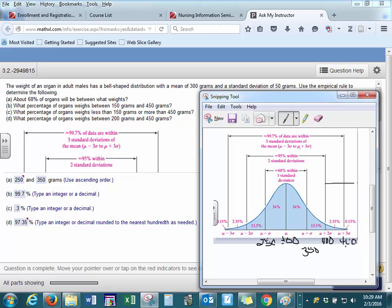If we go in the opposite direction, 250 minus 50 gives us 200 for two standard deviations. And if we subtract another 50, we have 150 here.